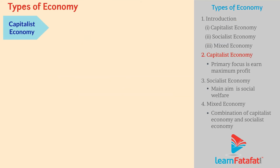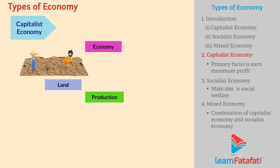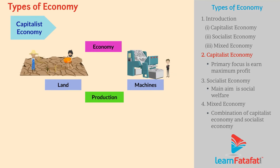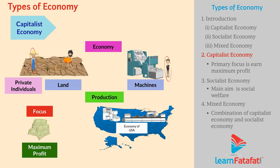Capitalist Economy. In this type of Economy, the means of production such as land and machines are owned and managed by private individuals. The primary focus of such type of Economy is to earn maximum profit. For example, the Economy of USA is a Capitalist Economy.